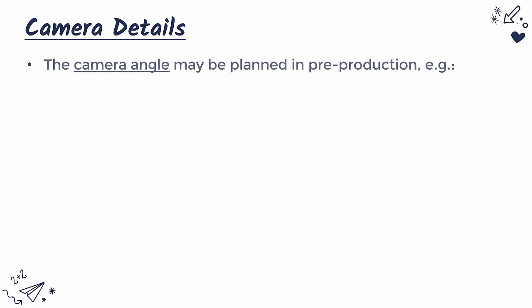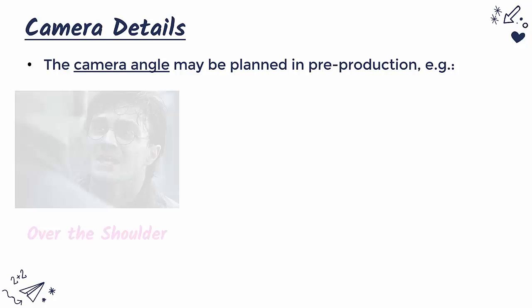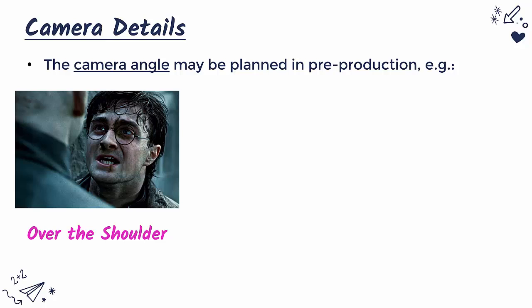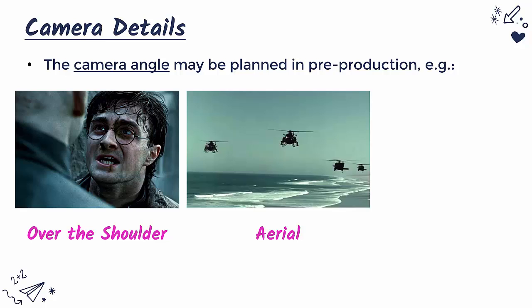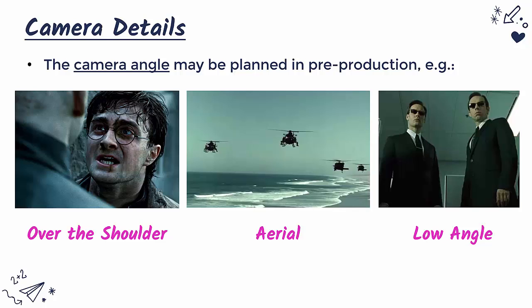There are further considerations regarding camera angle — really the job of a cinematographer or director. You might plan your camera angle and reflect this in your storyboard sketch. Is it going to be an over-shoulder shot, like this famous one from Harry Potter, where you can see part of someone's shoulder to get you involved in the conversation? Is it an aerial shot using a helicopter or drone, like this one from Black Hawk Down? Or a low angle where the camera is below someone's face or an object, like this shot from The Matrix?